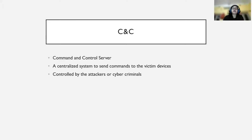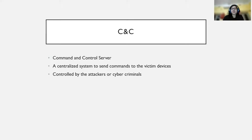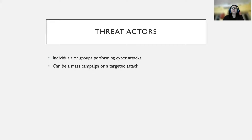These command and control servers are controlled by the attackers. Whenever we are performing threat hunting or threat intelligence, our intention is to figure out where the command and control server is located — it will have an IP address. We'll try to figure out which devices or IPs it is affecting and what the rest of the victim devices are. When performing malware analysis, we'll also get to know about such IPs and threat actors.